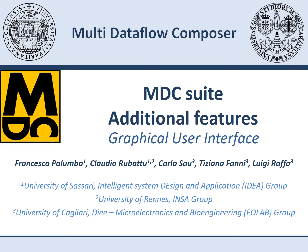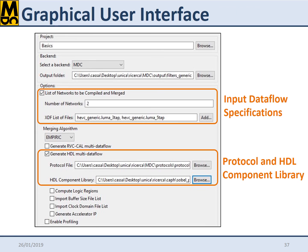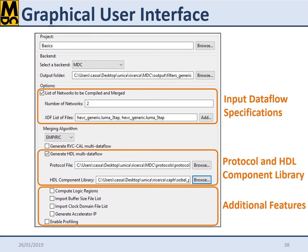Let's quickly see how to set the parameters in the user interface to run the described additional features of MDC. First steps are the same as in the baseline core case. The user shall specify the input dataflow specifications to be combined and shall provide the communication protocol in the HDL component library to be adopted. Then, if he or she wants to exploit one or more MDC additional features, different tabs are provided.